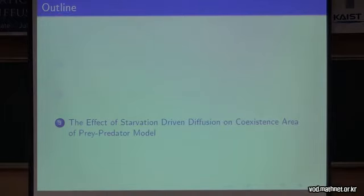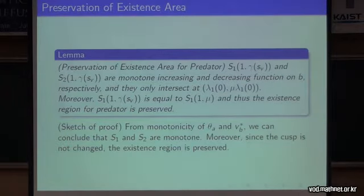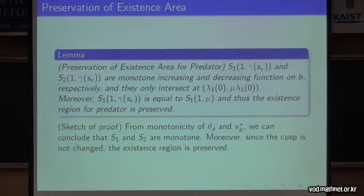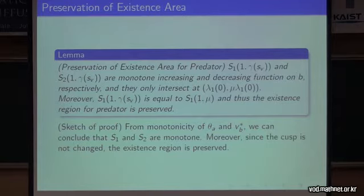Let us talk about the effect of starvation-driven diffusion on the co-existence area of the prey-predator model. We first talk about the existence area. Here, the two curves S1 and S2 are monotone increasing functions in A, as we've seen before, and monotone decreasing functions in B. We can show that they only intersect at the same point. Moreover, the lower part is the same as in the classical solution. Thus, we can say that the existence region for the predator is preserved.